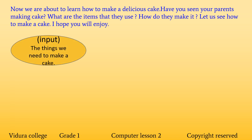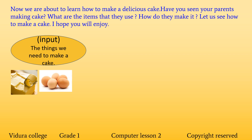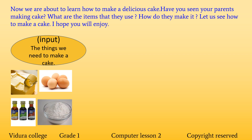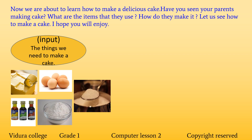The things we add to make the cake are called input: Butter, Egg, Coloring, Flour, Sugar. If you want to make it yummy, you can add some chocolate powder too. Now we need to mix them up.